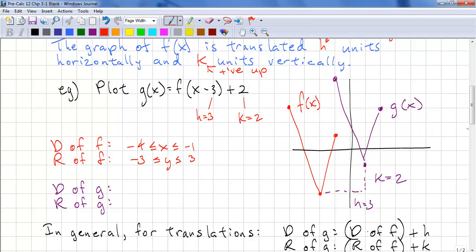To translate the domain and range, we just add h and k. So we have negative 1 to 2, and negative 1 to 5.